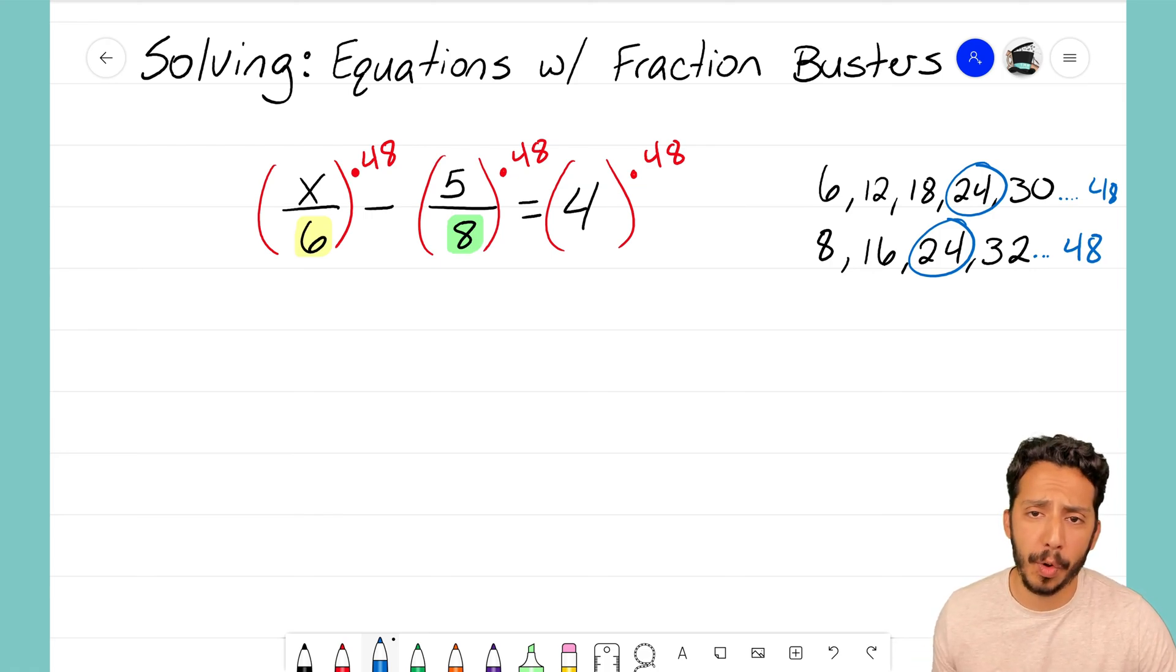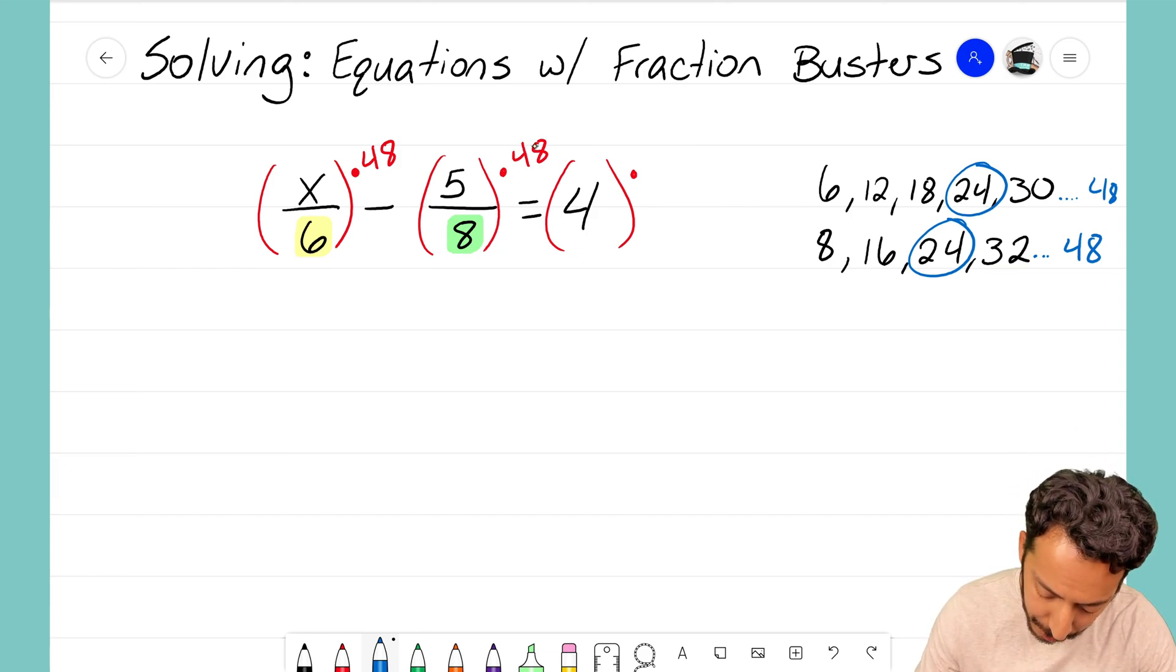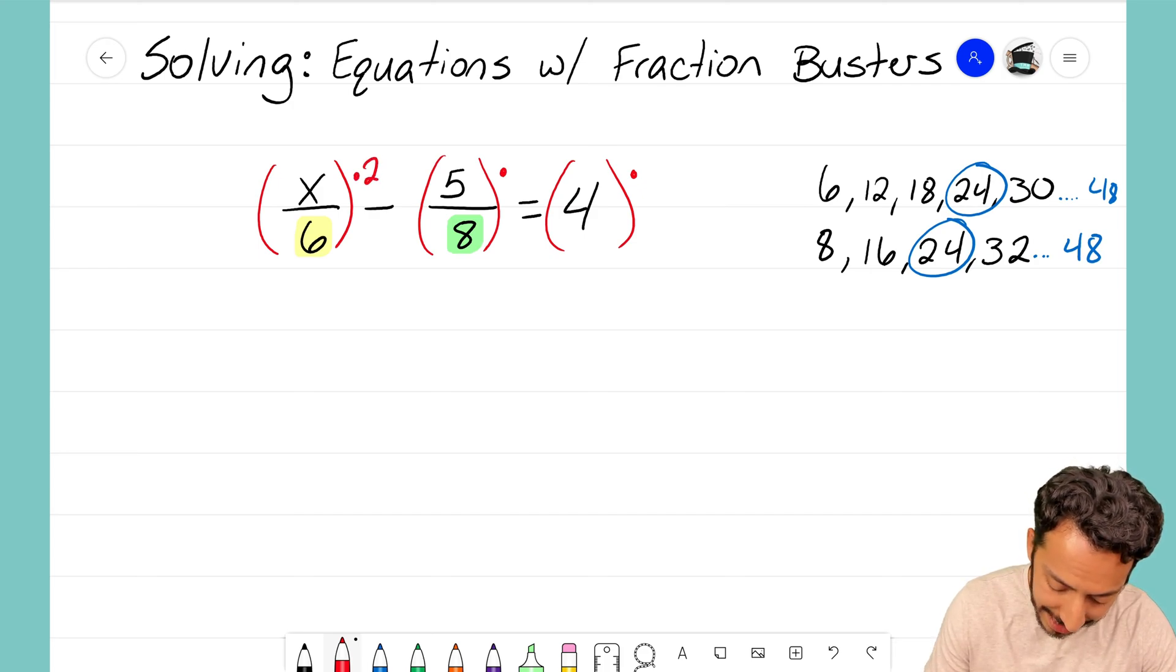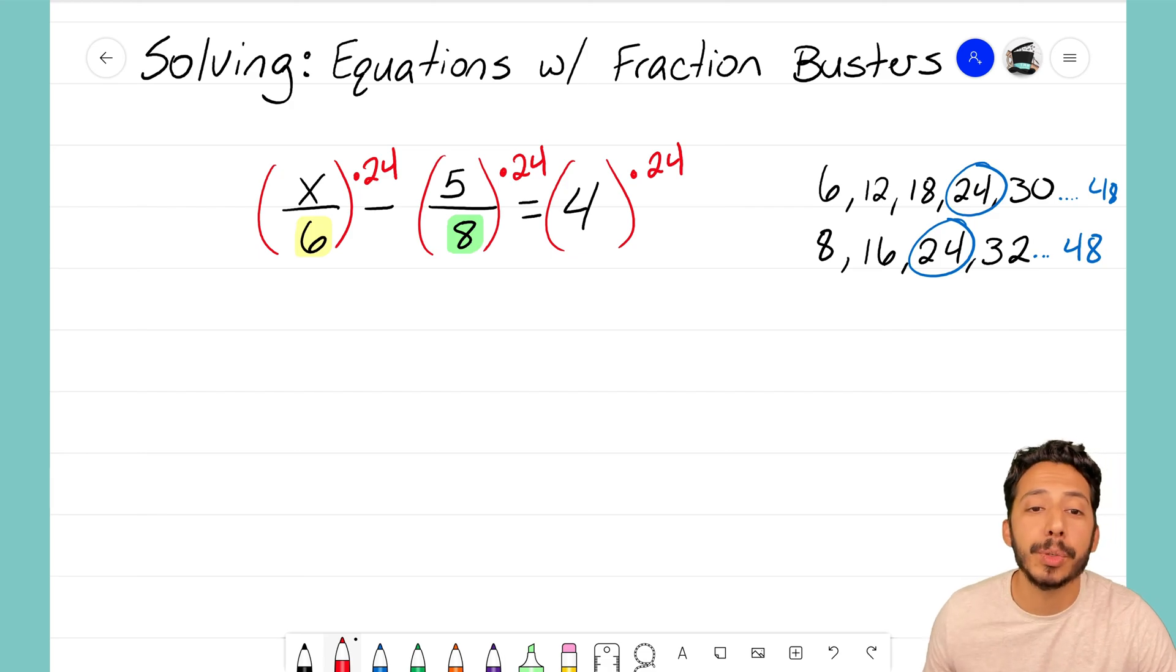I don't need to use 48—I could, I would still be able to get the right answer—but for this example video and really all of the other example videos I'm going to make, we're always going to try to use the least common multiple. So I'm going to take every single term here and I'm going to multiply it by 24.